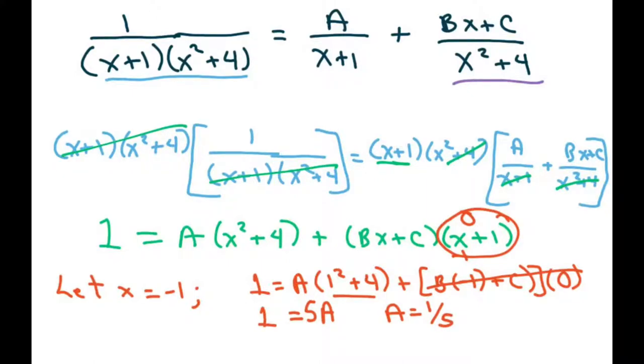Now let's try to find the B and the C. So to do that, we're going to let x equal 1. So if we let x equals 1, we get 1 equals A(1²+4) + B(1) + C(1+1).